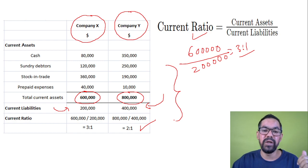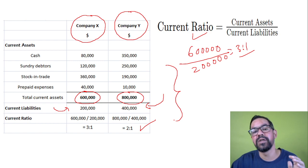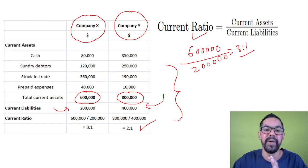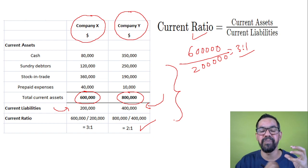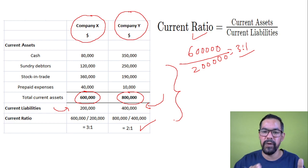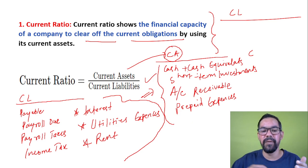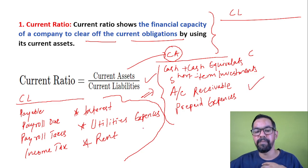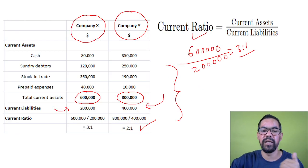The key thing you need is a basic understanding of current assets and current liabilities. When you pick entries from your balance sheet, you have to be very careful. If you remember these items you will be able to answer these questions. Current assets and current liabilities — once you know these lists, you can calculate the current ratio.